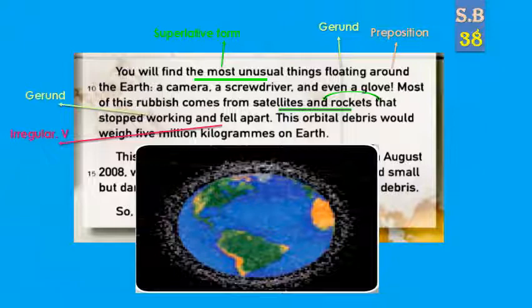This orbital debris would weigh five million kilograms on Earth — الحطام المداري يزن ما يقارب خمسة ملايين كيلوغرام على الأرض.